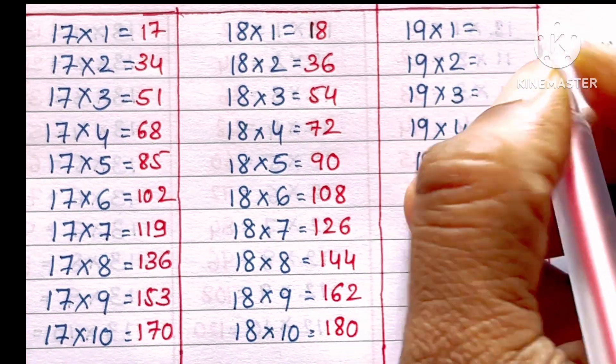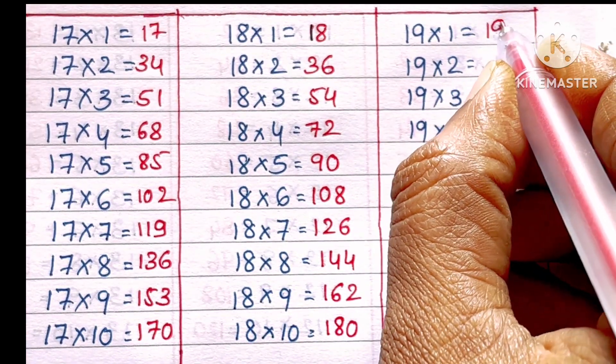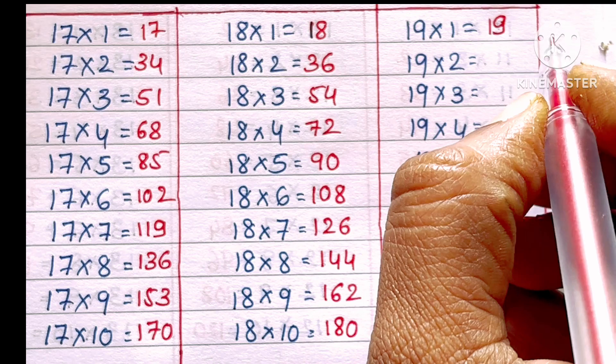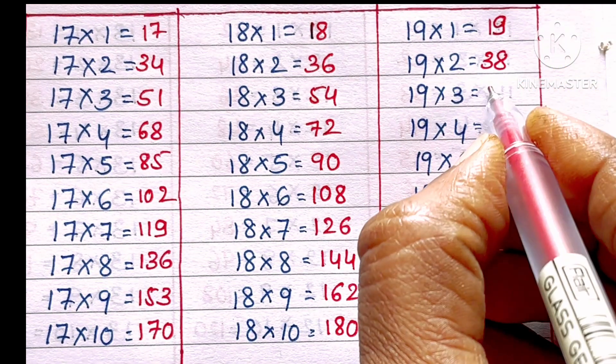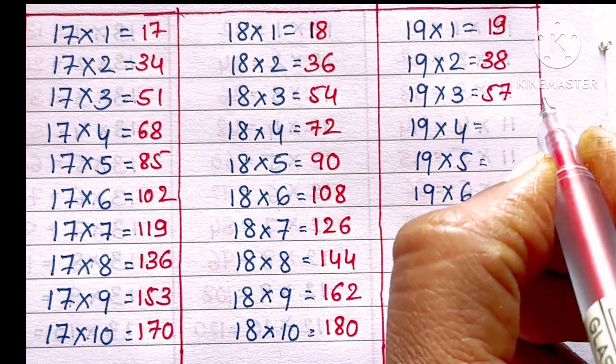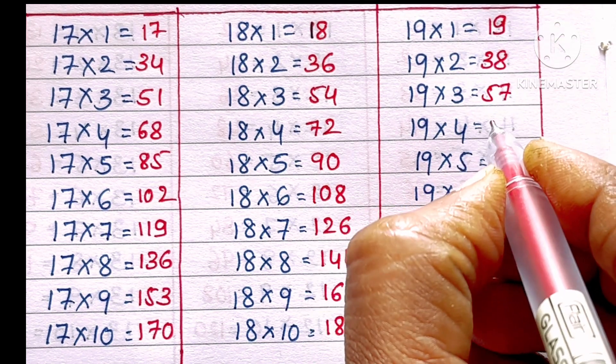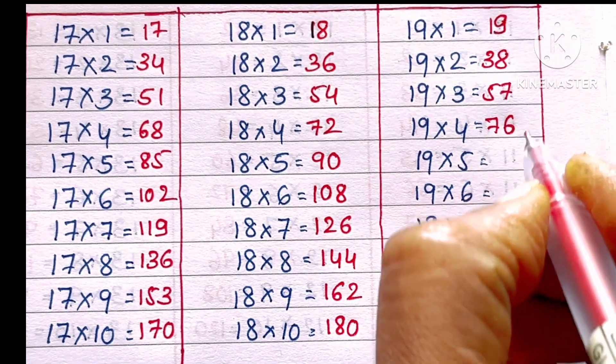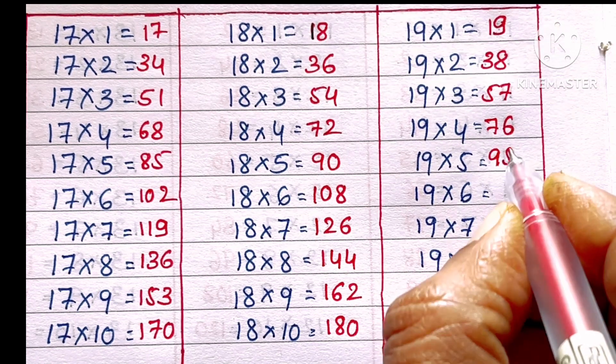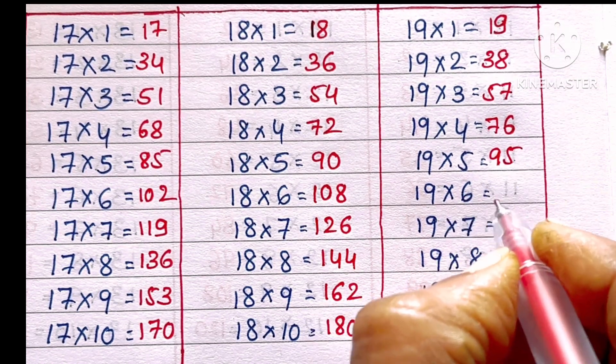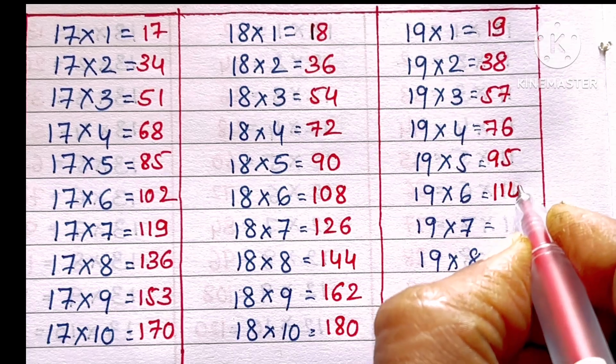19 ones are 19, 19 twos are 38, 19 threes are 57, 19 fours are 76, 19 fives are 95, 19 sixes are 114.